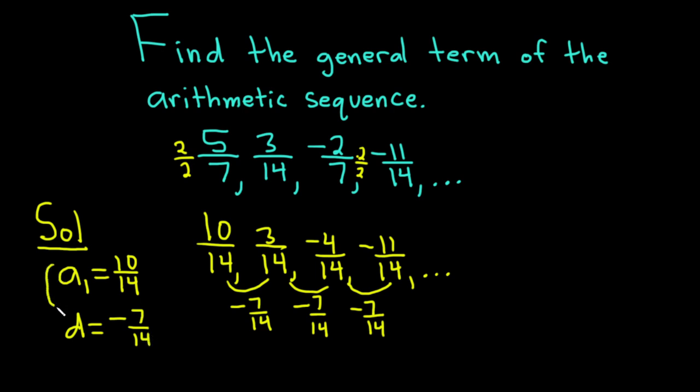So once you find your first term and your common difference, which is the number you add to get from one term to the next, you can use your formula. So the formula for the general term of an arithmetic sequence, which is also called the nth term of the arithmetic sequence, is a sub n.